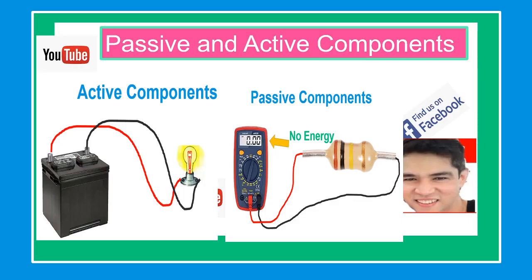Our topic for today is passive and active electronic components. An active component is an electronic component which supplies energy to a circuit and has the ability to electrically control electron flow, and is capable of delivering energy independently for an infinite period of time and supplying average power to some external devices. A current source is also considered an active component. The current supplied to a circuit by an ideal current source is an independent circuit voltage. All electronic circuits must contain at least one active component.